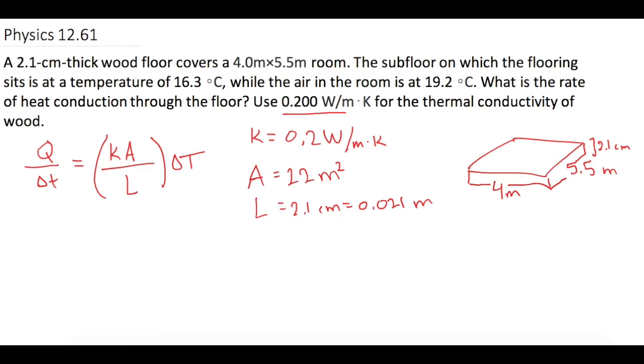Now, last, the change in temperature is the room. It's 19.2 degrees Celsius. And underneath the floor is 16.3 degrees Celsius. So we have more heat or more energy up in the room, which is going to flow down through the floor to where there's less energy. And so the delta T is negative 2.9 degrees Celsius or negative 2.9 Kelvin.